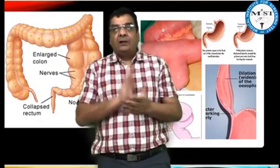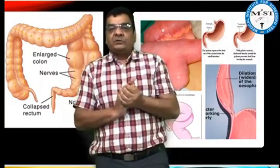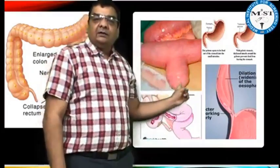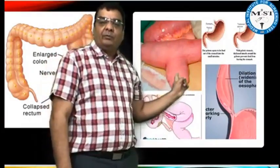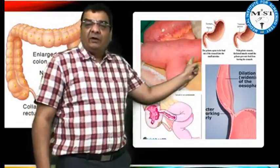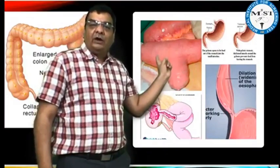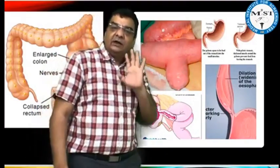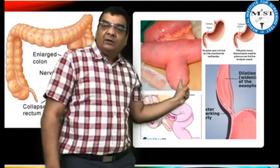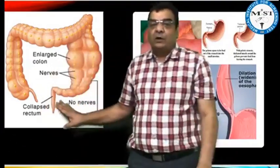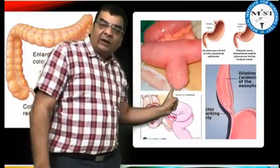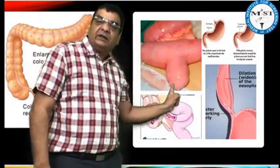Now let's look at the options. The first option is Meckel's diverticulum. Meckel's diverticulum is a true diverticulum — it has all layers of the intestine, which means the nerve plexus would also be present. In Hirschsprung's, there are no ganglion cells and no nerve plexus. In Meckel's, the normal layers are present, so the nerve plexus would be there.